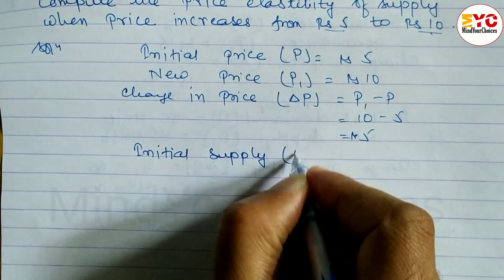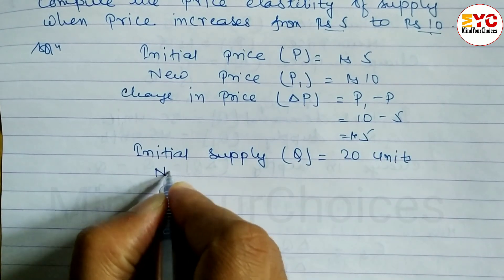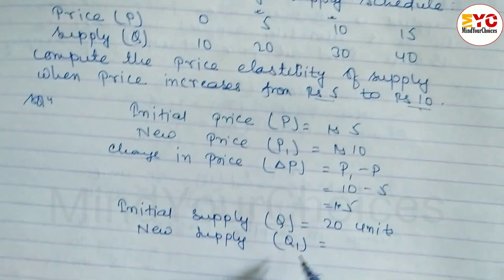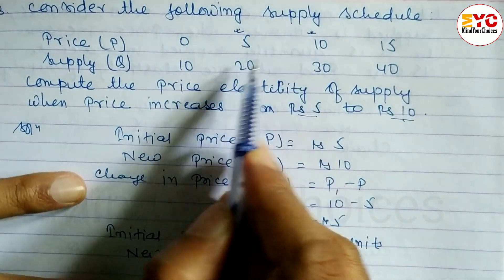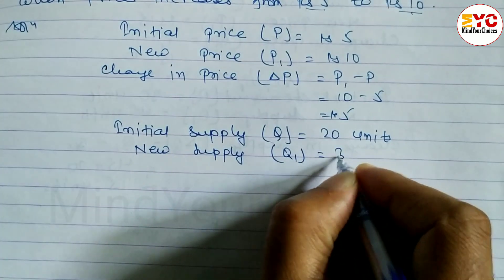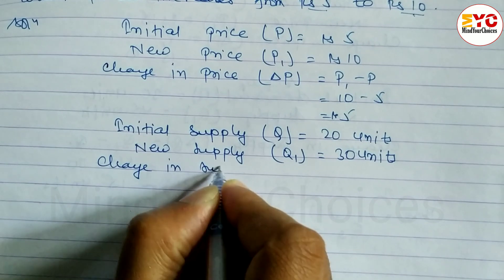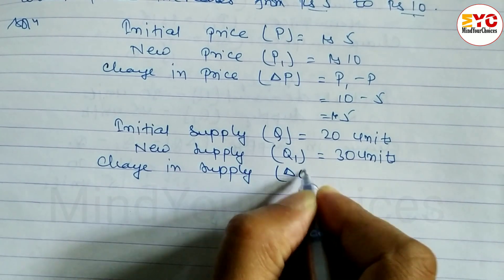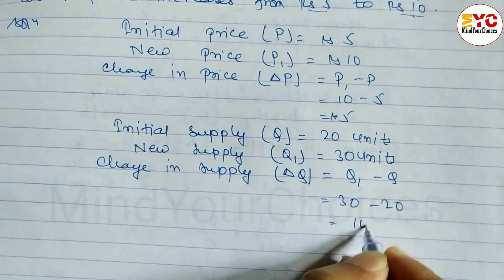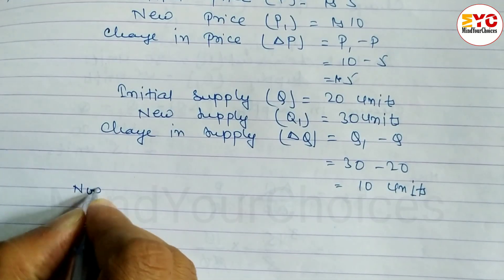The new supply Q1: when the price rises from 5 to 10, supply also increases — when the price is 10, quantity supplied is 30. So new supply Q1 = 30 units. Change in supply ΔQ = Q1 minus Q = 30 minus 20 = 10 units.